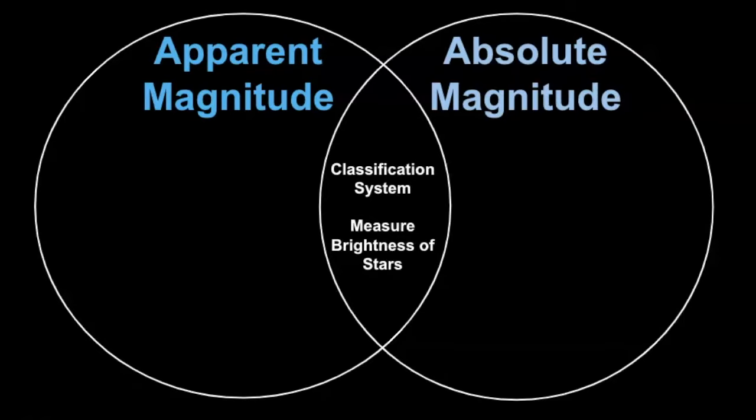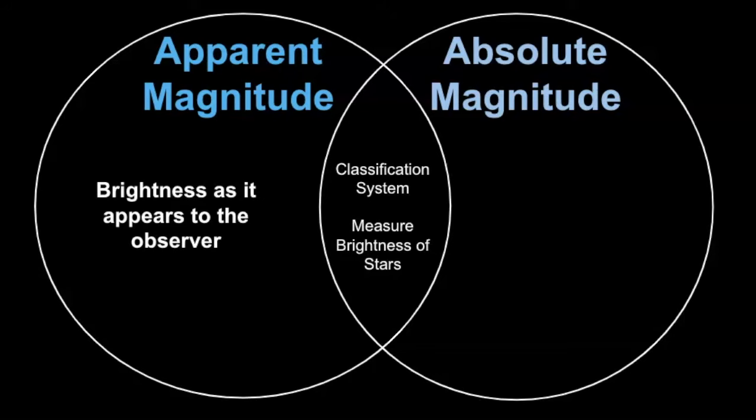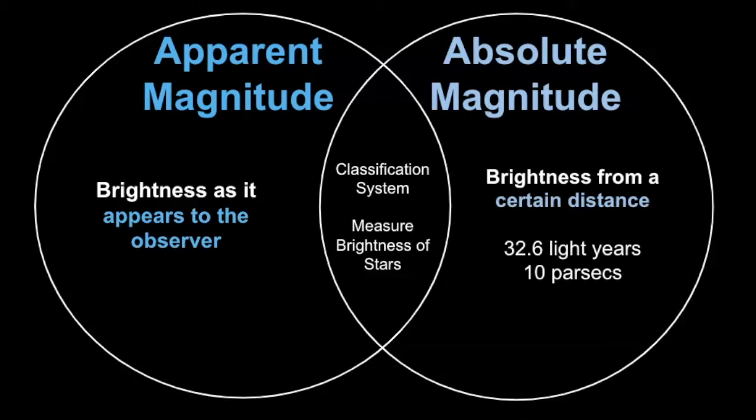So, let's bring it back to apparent magnitude and absolute magnitude. They're similar in the sense that they're both classification systems that use brightness as a measurement. Okay, so we look at a star's brightness, and we're able to measure it. But they're different. Apparent magnitude is brightness as it appears to the observer, where absolute magnitude is brightness from a certain distance. And that distance is defined as 10 parsecs, or 32.6 light years.